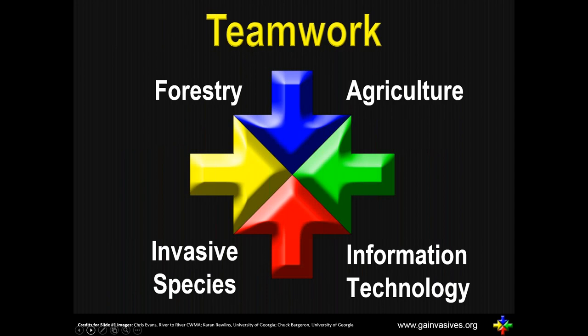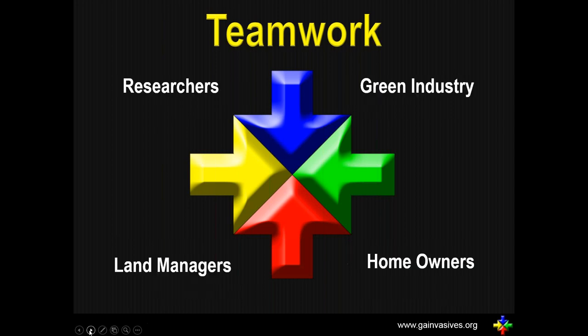It's a matter of teamwork when looking at the larger community. Forestry and agriculture both use information technology to help tackle the issues of invasive species. The information that goes into EDMAPS, which is the database holding information on invasive species, can give important information to researchers, land managers, and the grain industry, as well as homeowners.